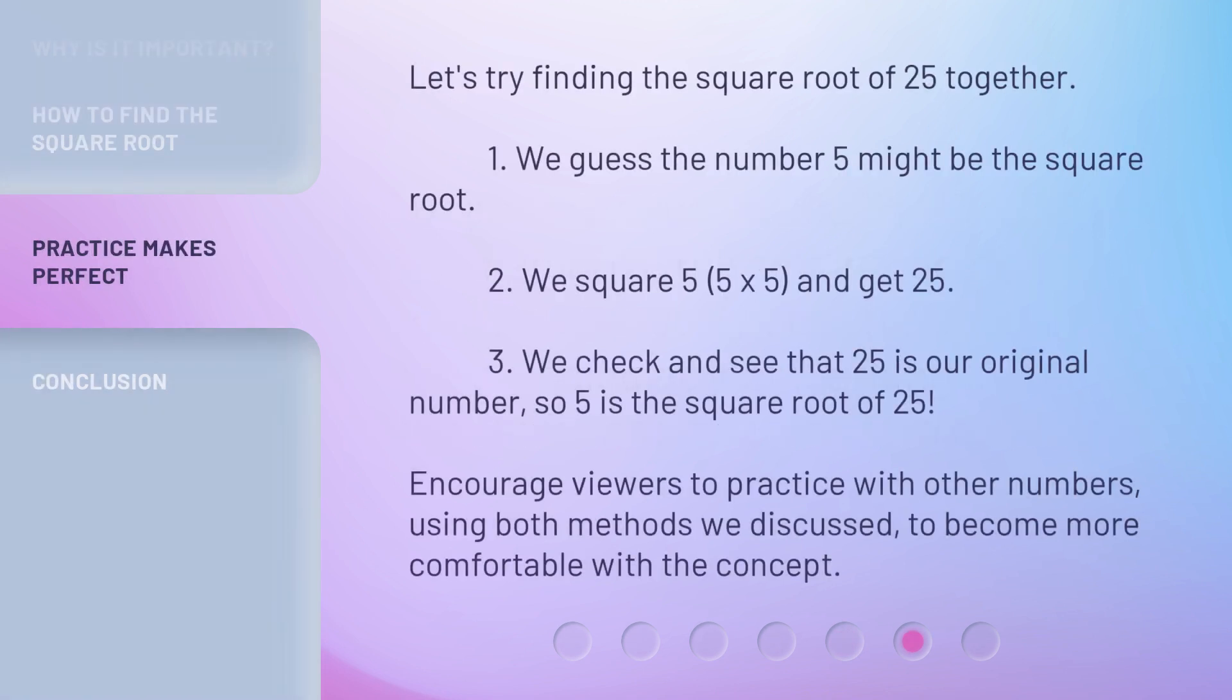Let's try finding the square root of 25 together. 1. We guess the number 5 might be the square root. 2. We square 5 (5 by 5) and get 25. 3. We check and see that 25 is our original number, so 5 is the square root of 25.